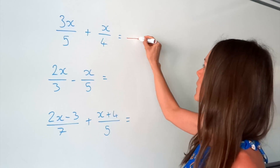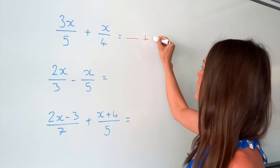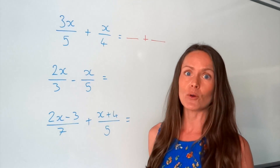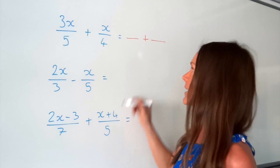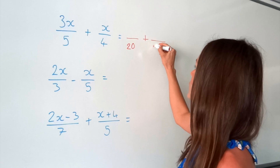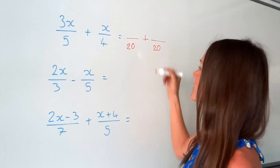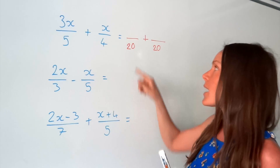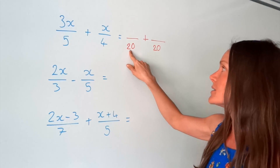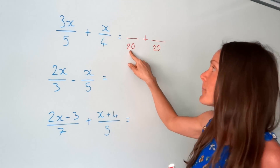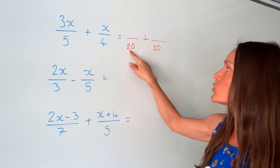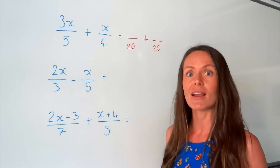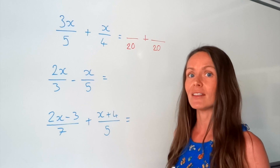So in the first one up here, a number that both 5 and 4 fit into exactly is 20. So 20 is the lowest common multiple of 5 and 4. You don't have to choose 20 — you could choose a bigger number, but it's good if you choose a smaller number because it means less simplifying later on in the question.